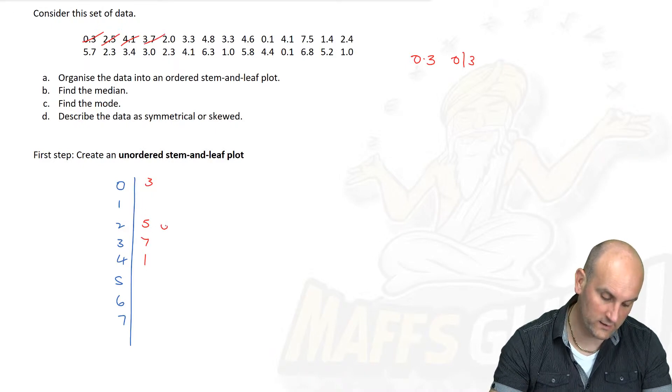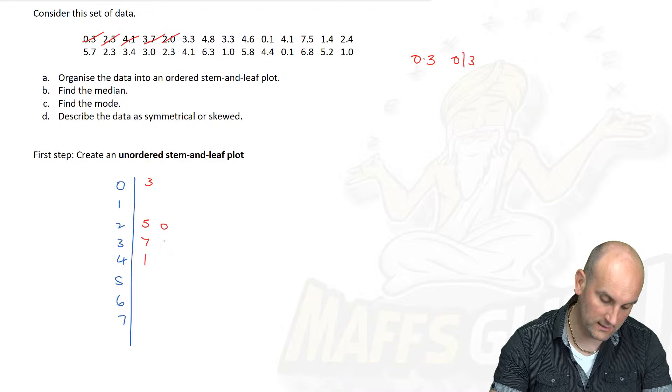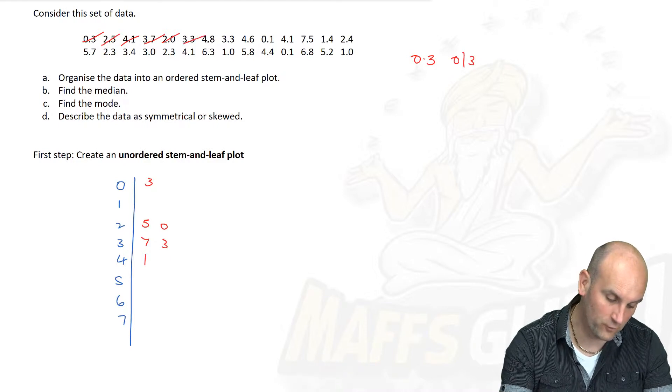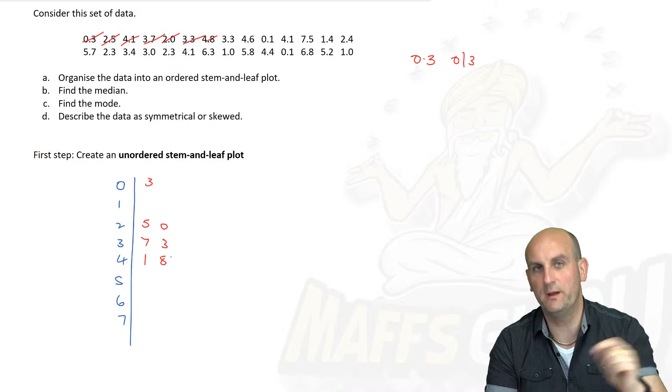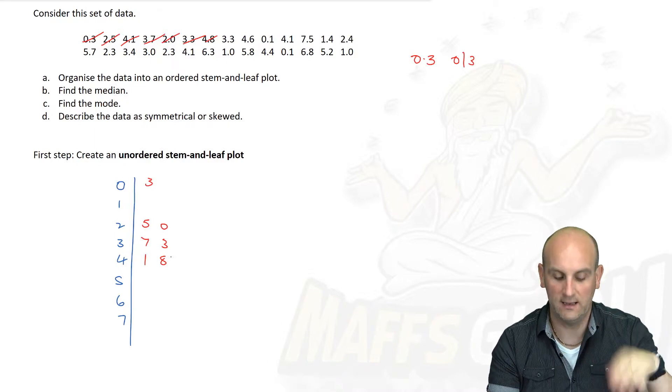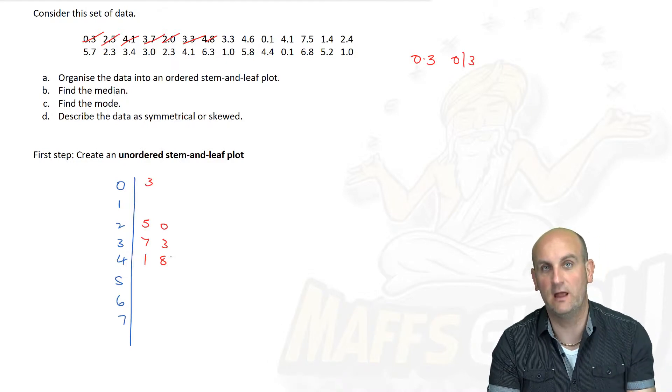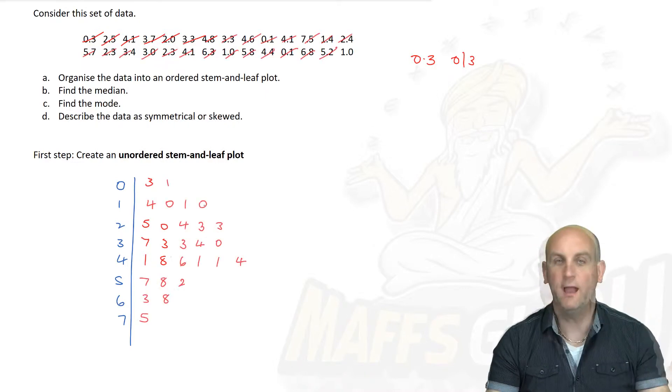Then 2.5 is 2 with a 5. Not 25. 4.1 goes there. 3.7 goes there. 2.0 goes there. 3.3 goes there. 4.8 goes there. Do you see how I'm doing this? Number by number, working across the rows. I'm going to carry this on and fade out and fade back in again.